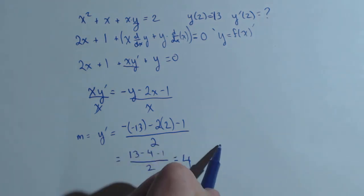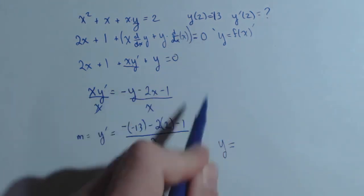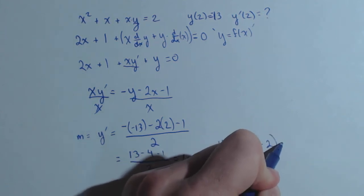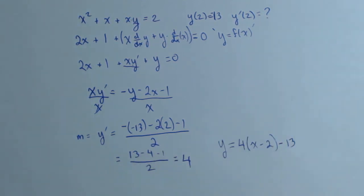And if we wanted to find the tangent line, simple now because we've got a point that it goes through. It's 4 times x minus 2 minus 13. And we could simplify that, but that's good enough.